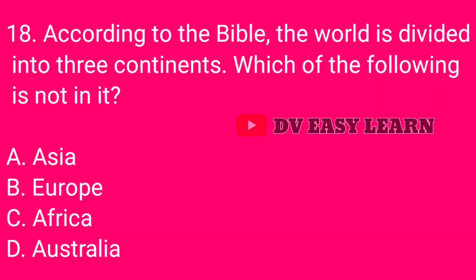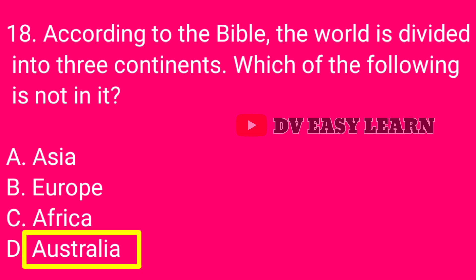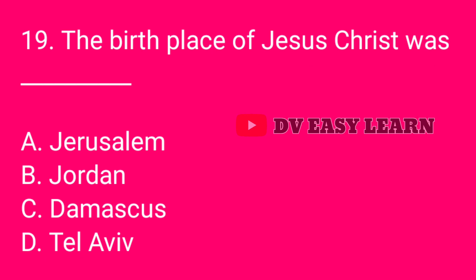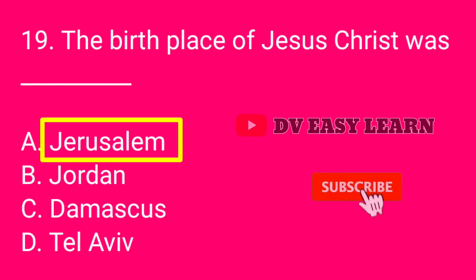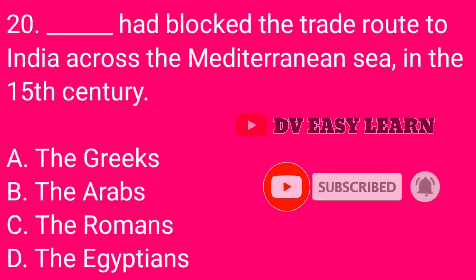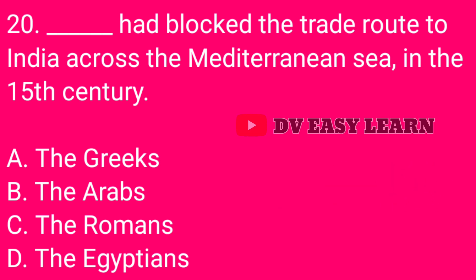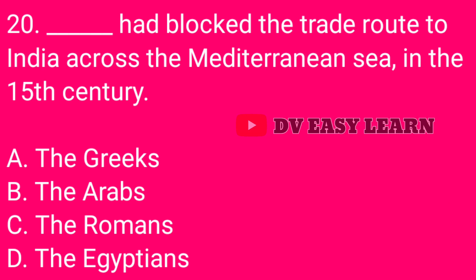Question number 18: According to the Bible, the world is divided into three continents. Which of the following is not in it? Correct answer: Australia. Question number 19: The birthplace of Jesus Christ was — correct answer: Jerusalem. Question number 20: Dash had blocked the trade route to India across the Mediterranean Sea in the 15th century — correct answer: The Arabs.